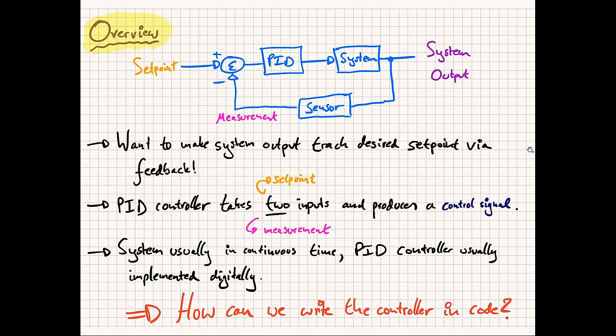The systems we encounter typically function in continuous time — for example, a fighter jet or the cruise control in a car. It is however very beneficial to implement PID controllers discretely in software. Digital systems typically are far more robust, cheaper, and far easier to reprogram. This is why essentially all modern control systems are digitally implemented.